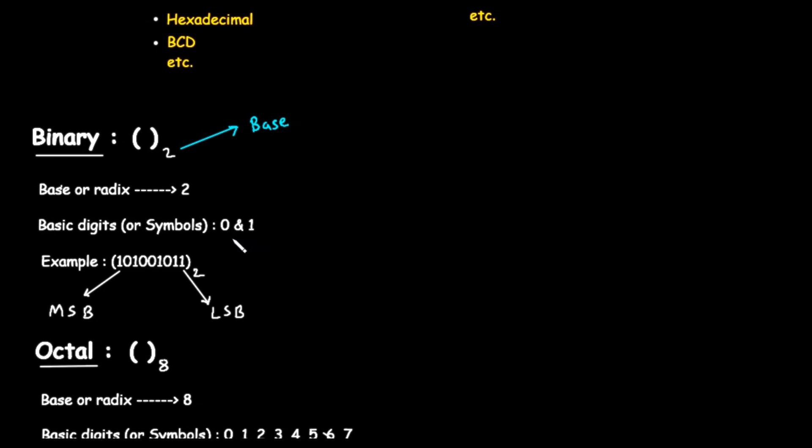Why is this system so important? Because computers think in terms of on and off, or true and false. A 1 can represent an on state, and a 0 can represent an off state. This simple, two-digit system is the language of computers. Let's look at the example given, the number 101001011 in base 2.